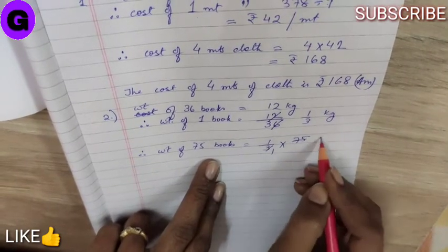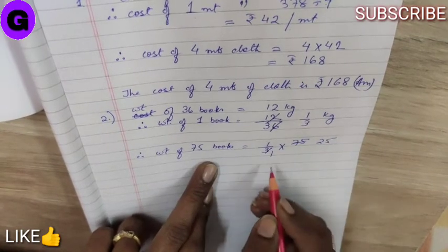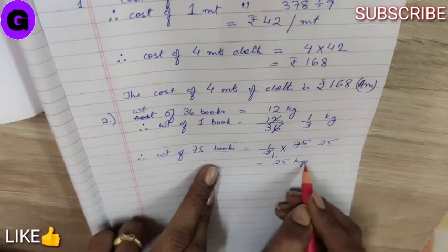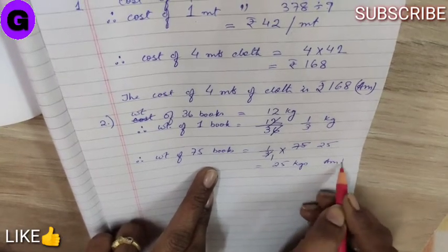3 ones are 3, 25. That is 25 kgs is the answer.